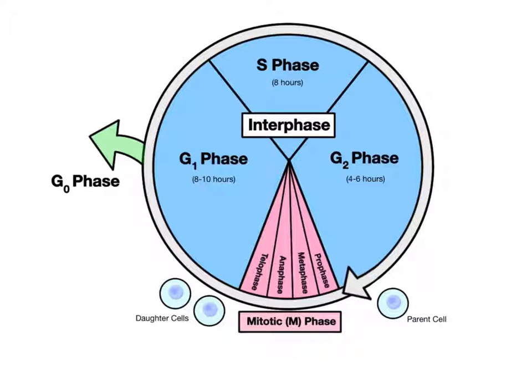Some cells, however, exit the cycle and enter a stage called G0, where they remain functional but no longer divide. Cells that enter G0 include nerve and muscle cells that usually divide once early on in their embryological development and then grow and branch, but don't undergo further mitosis.